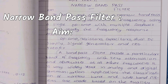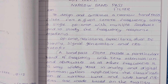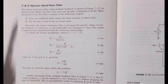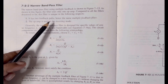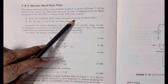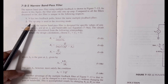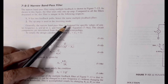Today let's design and construct a narrow band pass filter for a given center frequency using a single op-amp with multiple feedback. We can also study the frequency response of the circuit. A narrow band pass filter possesses a narrow band of frequency over which output is steady. For such circuits, quality factor Q is generally greater than 10. The circuit is unique for two reasons: it has two feedback paths, hence the name multiple feedback filter, and the op-amp is used in the inverting mode.